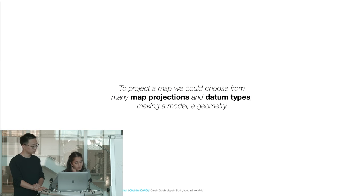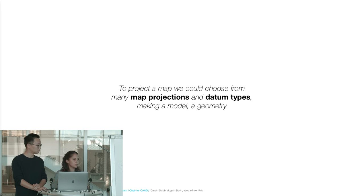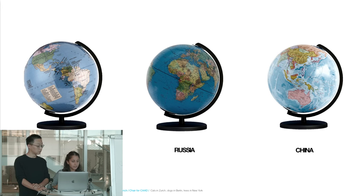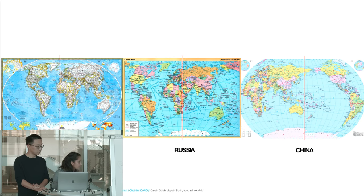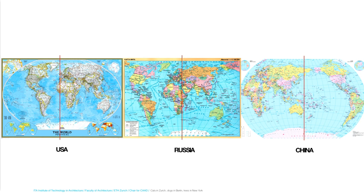Another example: to project a map — what we call in geography the projection of the map — you can choose a map projection and datum type, which means creating the model. There are many map projections and datum types, and depending on which one you use, you're creating a new model. For example, searching 'world globe' in English gives one result, in Russian gives another, and in Chinese yet another. Where you come from affects the way you see the world, with each country placing itself at the center. It's never absolute — always changing by personal interest.